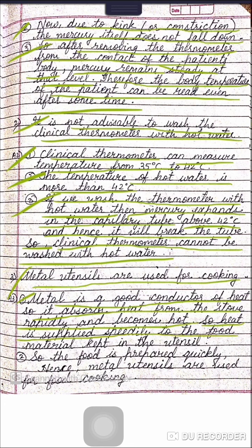Number four: ice is kept in sawdust. Sawdust is a bad conductor of heat. When ice is kept in sawdust, heat from the atmosphere cannot pass to the ice and hence ice does not melt rapidly. So, ice is kept in sawdust.